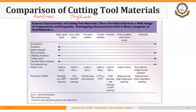Finally, let's compare the properties of different cutting tool materials. We discussed high-speed steels, uncoated carbides, coated carbides, ceramics, CBN, and diamonds. We have listed them from left to right here.